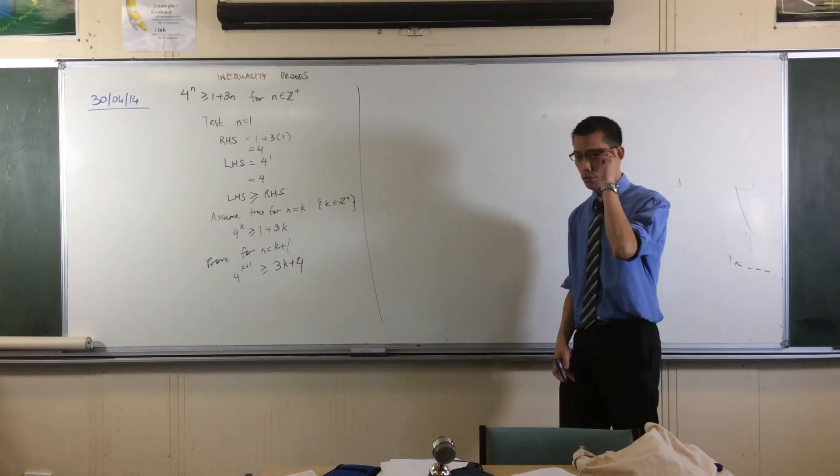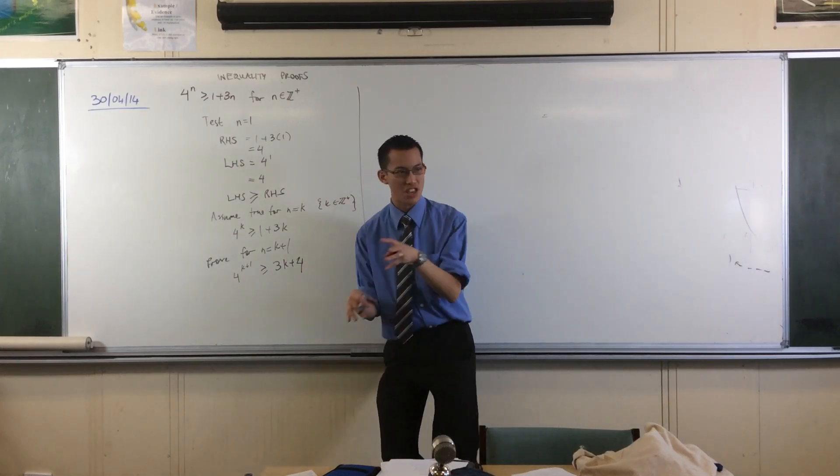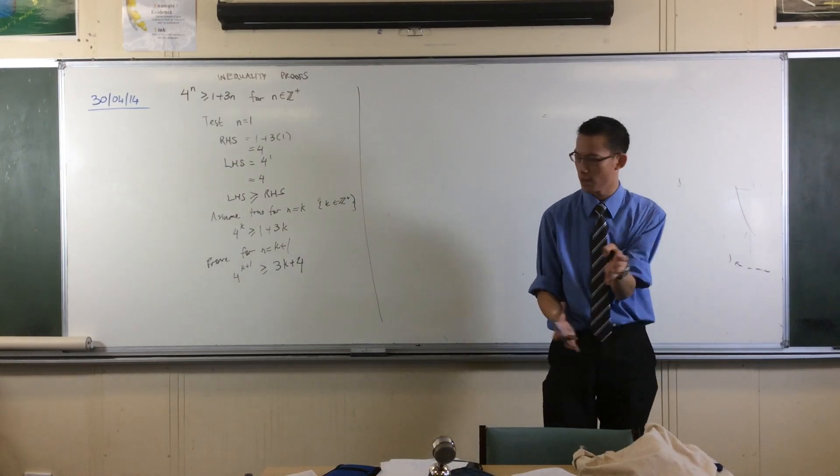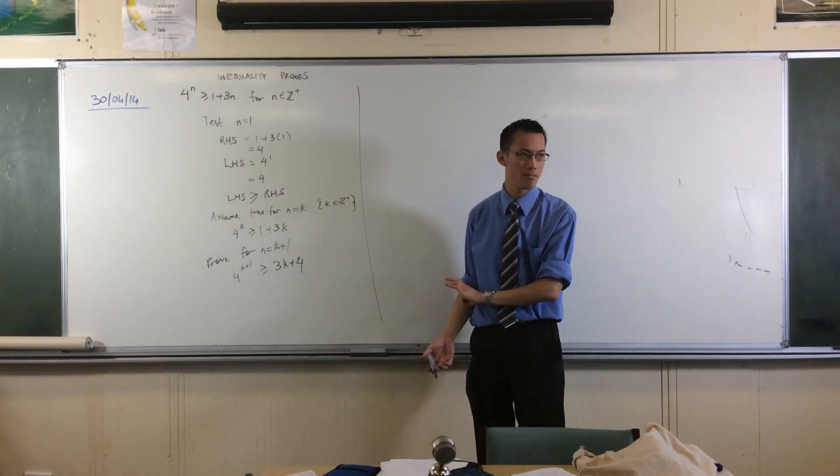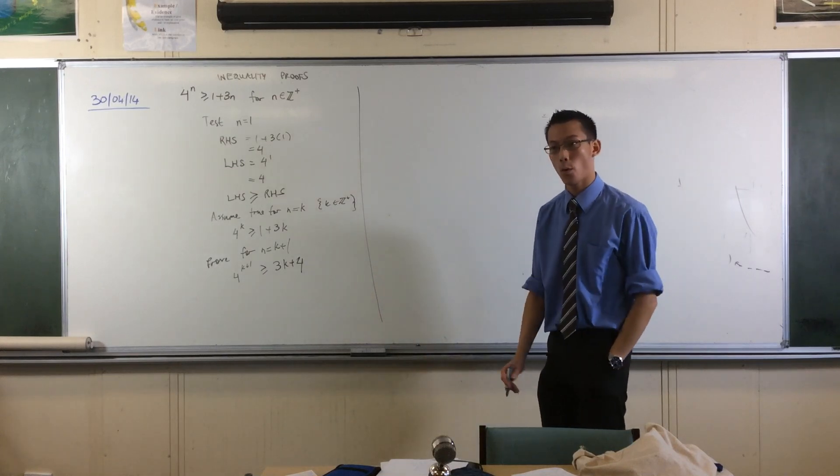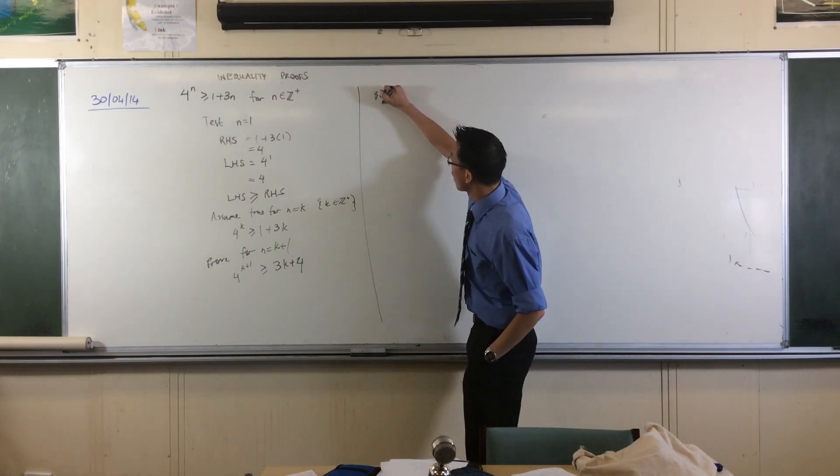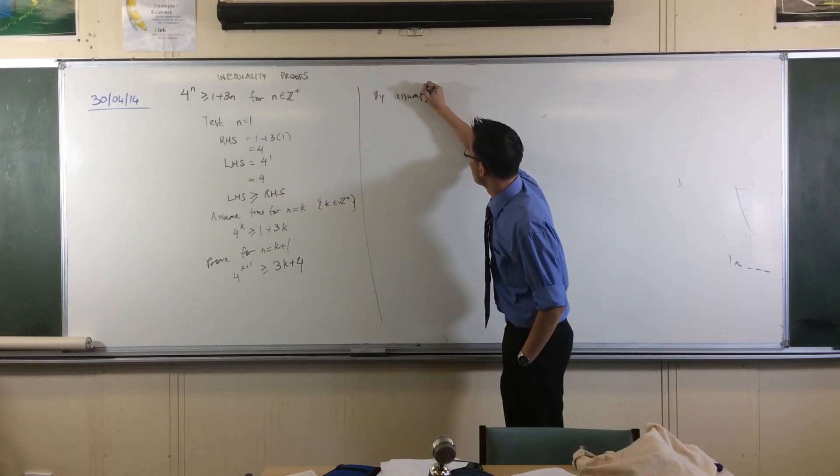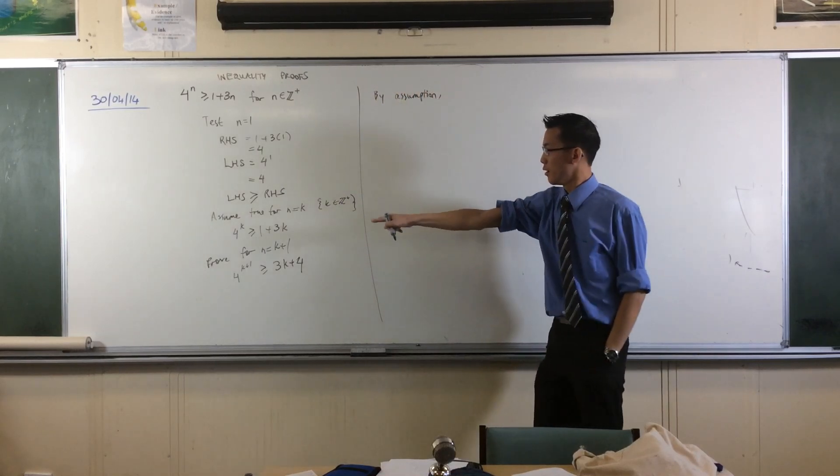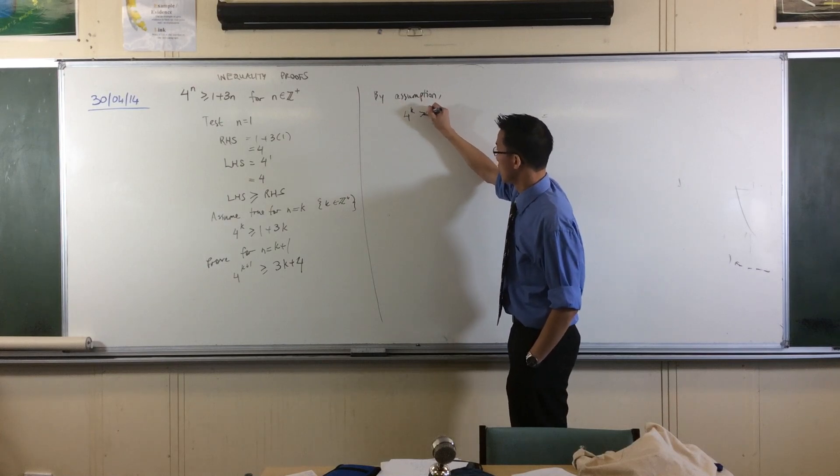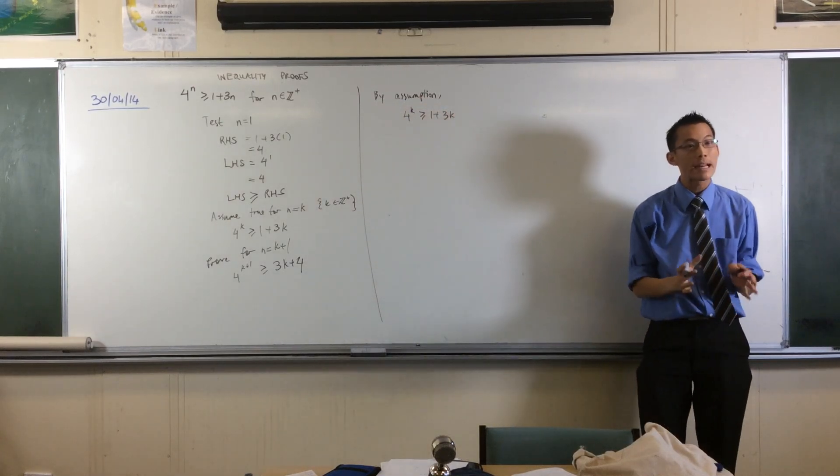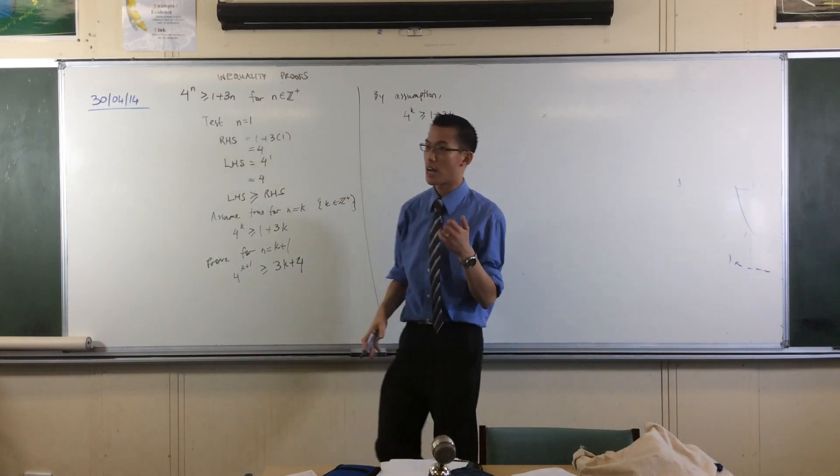So here's what I'm going to do. Usually you'll look at one side and then you work with it and then at some point you can put in the assumption. And you could do it that way. I think it's going to be more straightforward for you if you actually start off with the assumption right away. By assumption, 4 to the k is greater than or equal to that. So I already know this is true and now I can start working on it.